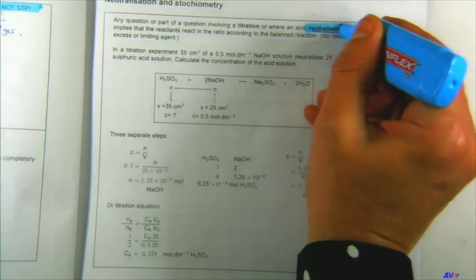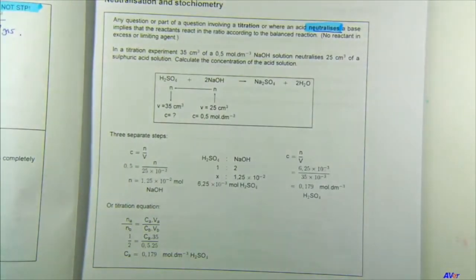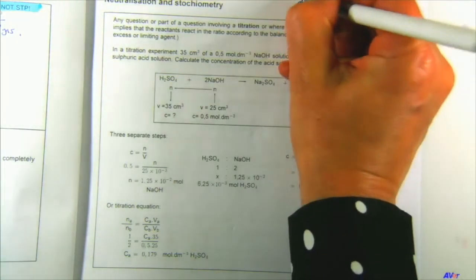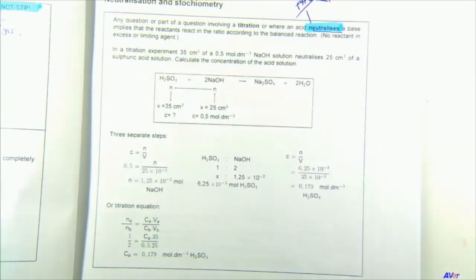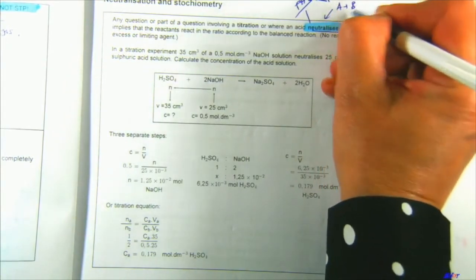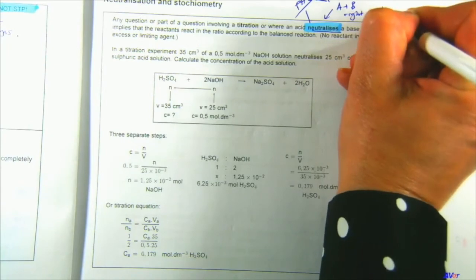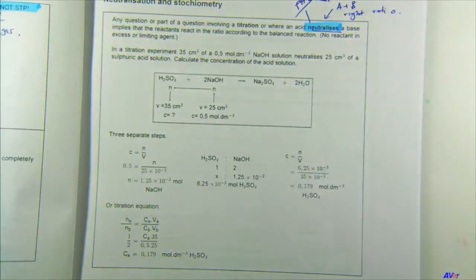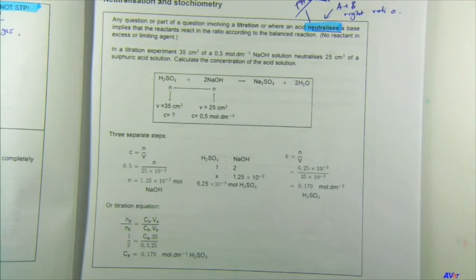In a titration, an acid neutralizes a base. Let's talk about that word 'neutralize.' It does NOT mean pH 7. What it does mean is that the acid and base have reacted in the correct ratio — they have fully reacted. A strong acid with a strong base gives pH 7, but a strong acid with a weak base should give a pH less than 7, which is acidic.